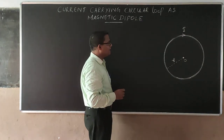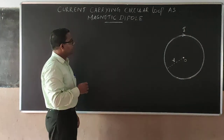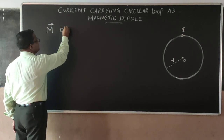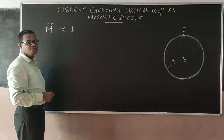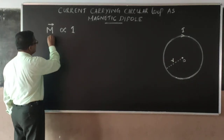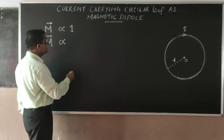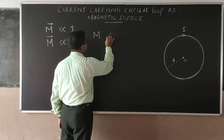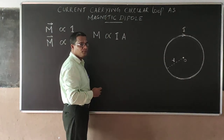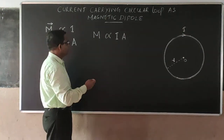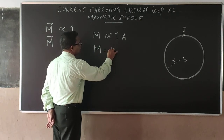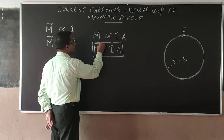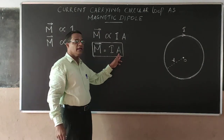We can define the magnetic dipole moment of this circular loop. The magnetic dipole moment is directly proportional to the current times the area of the loop. The proportionality constant is 1, and therefore M equals I times A. This is the equation for the magnetic dipole moment of a loop of area A carrying current I.